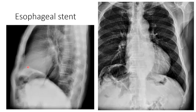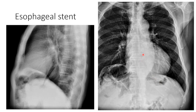You may also see esophageal stents. This one is in the distal esophagus heading across the gastroesophageal junction. These are typically placed in esophageal cancer patients to provide symptomatic relief from esophageal strictures and dysphagia.